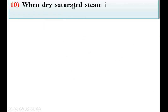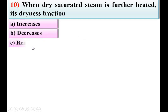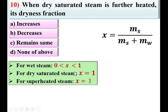Next: when dry saturated steam is further heated, its dryness fraction option increases, decreases, remains same, or none of the above. Dry saturated steam has dryness fraction 1. If further heat is supplied, it converts into superheated steam. For superheated steam, dryness fraction is also equal to 1, since dryness fraction has a range from 0 to 1 only. So the dryness fraction remains same. C is the right answer.